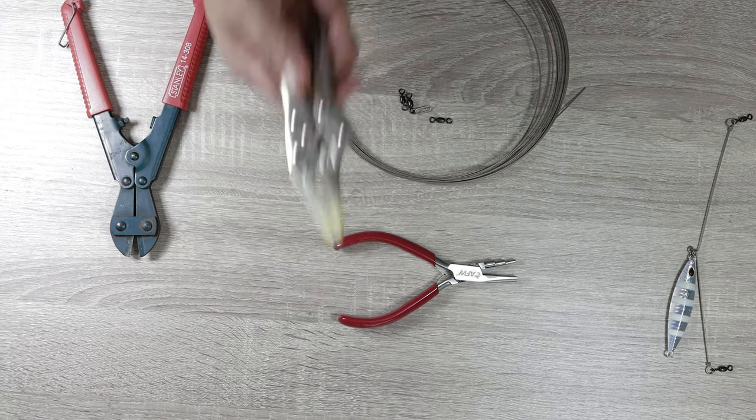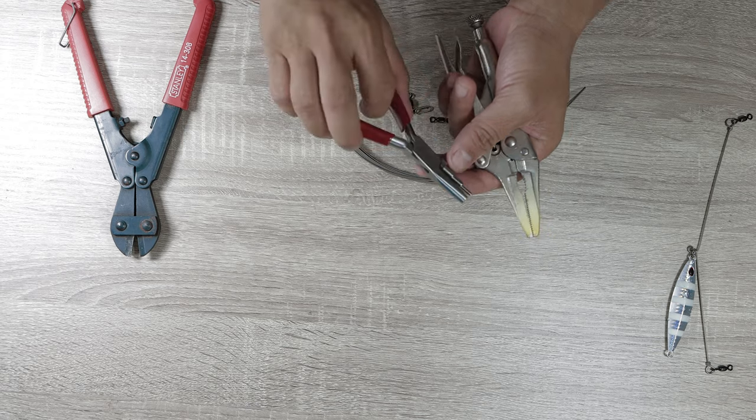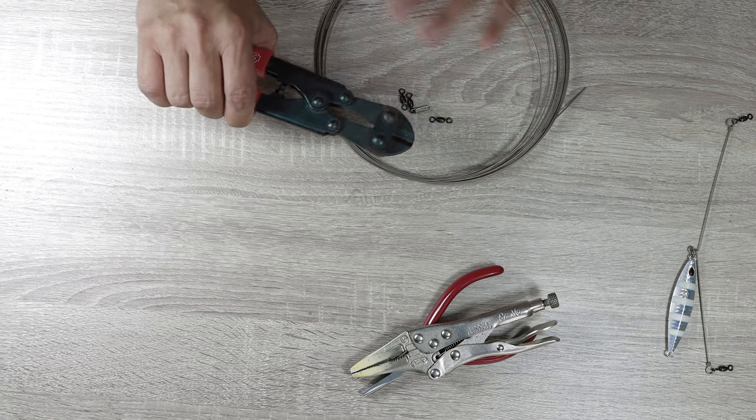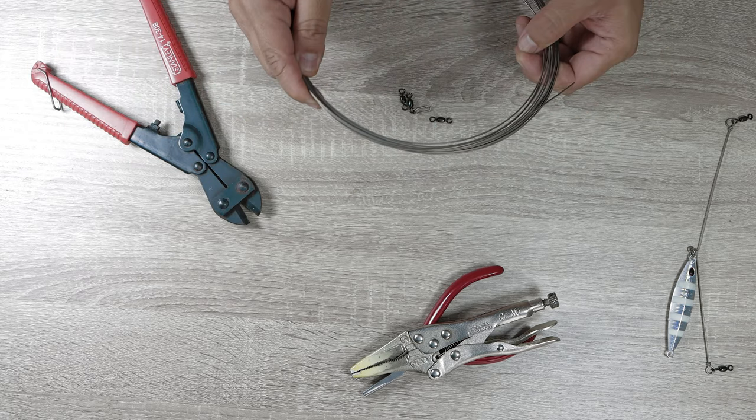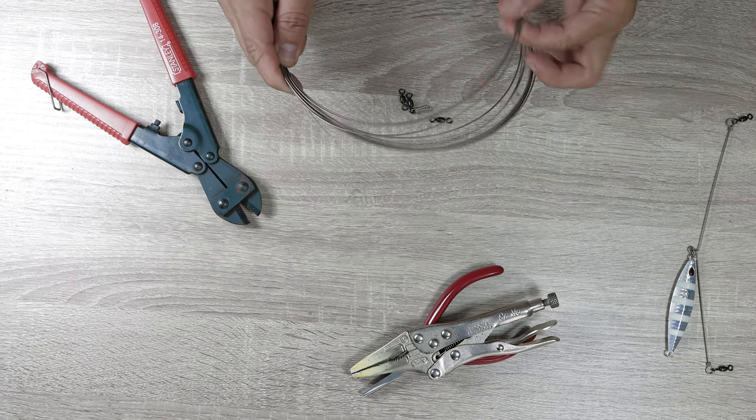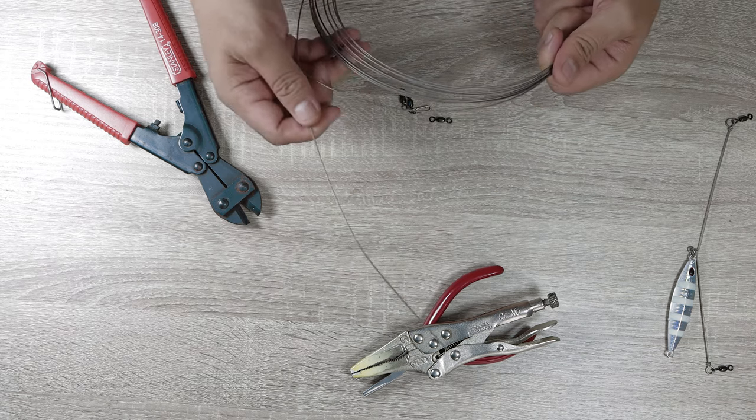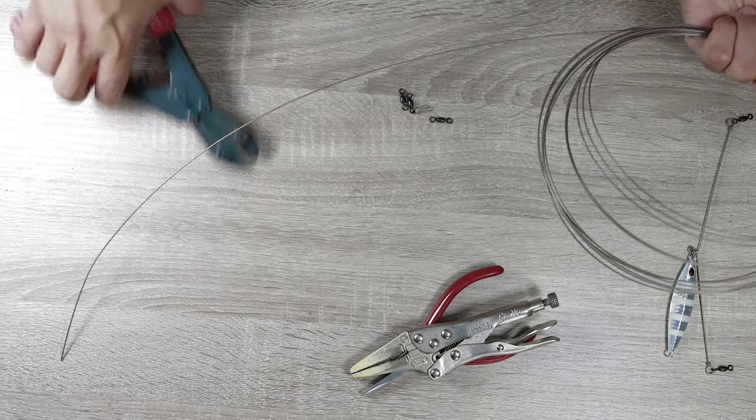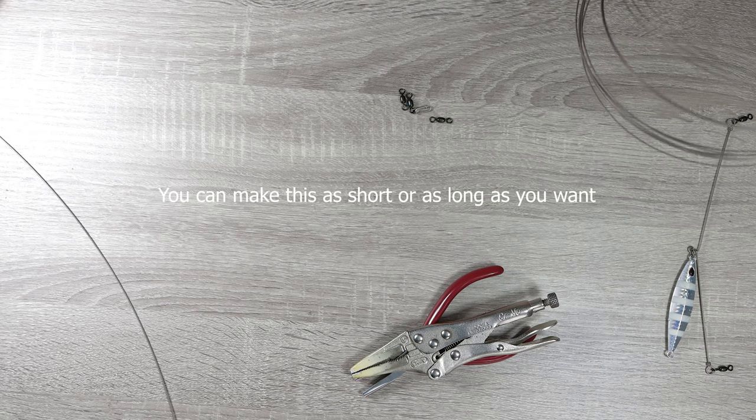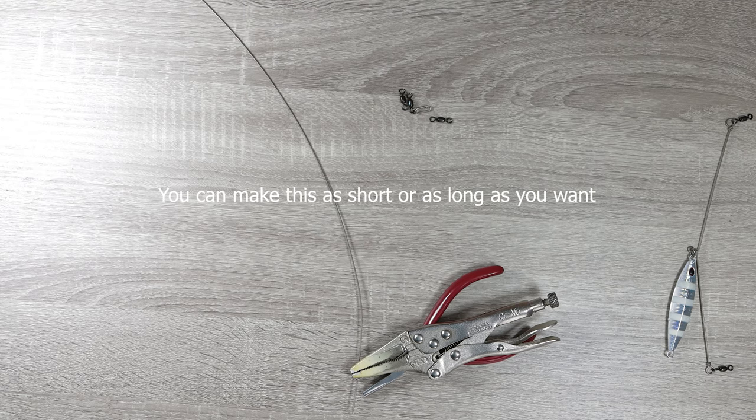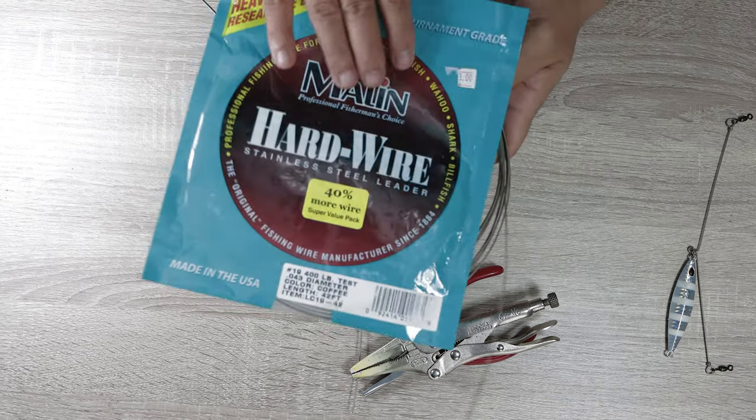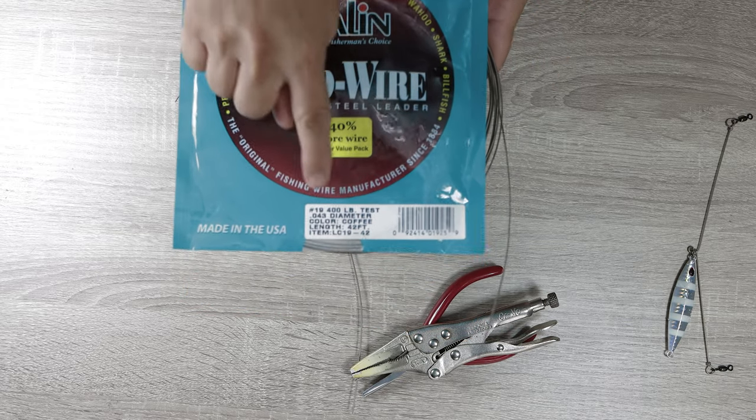I often use a vise grip and an eye forming tool and I use this only once and basically it's to cut the wire. This is Maylene 400 pound test.